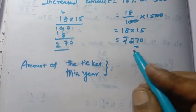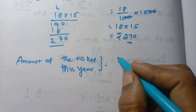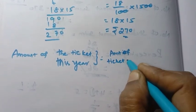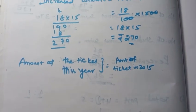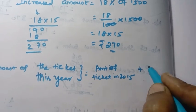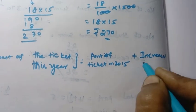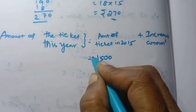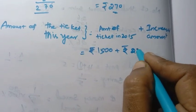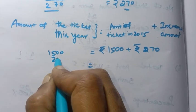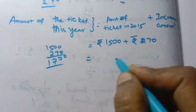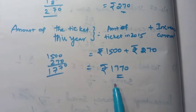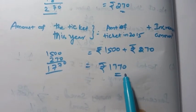So the amount of the ticket this year equals the amount in 2015 plus the increase: 1500 + 270 = Rs. 1770. The price of a ticket this year is Rs. 1770.